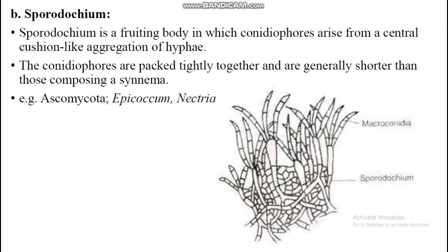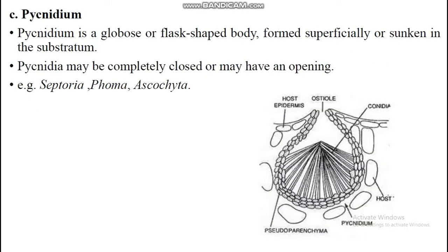Pycnidium: a pycnidium is a globose or flask-shaped body formed superficially or sunken in the substratum. Pycnidium may be completely closed or may have one opening, as you can see in the figure. Examples include Septoria, Phoma, and Ascochyta.